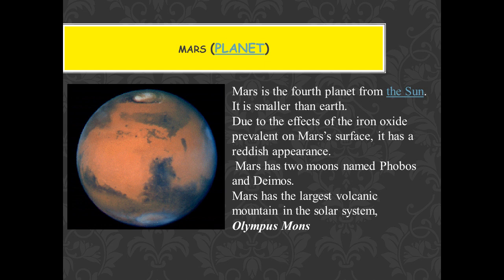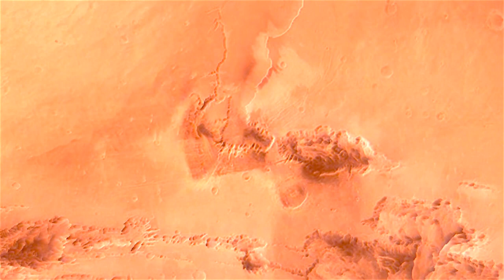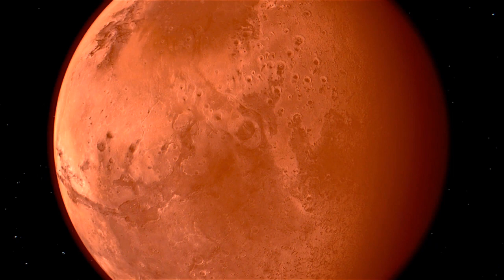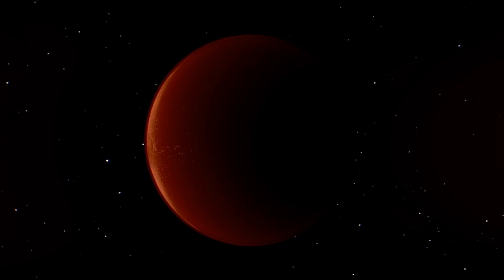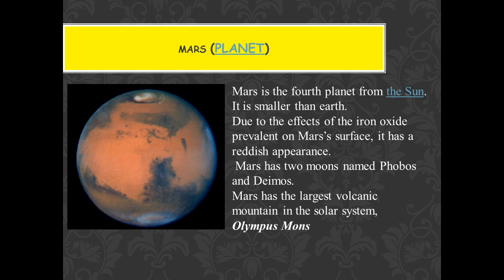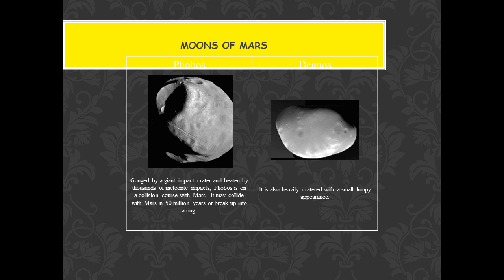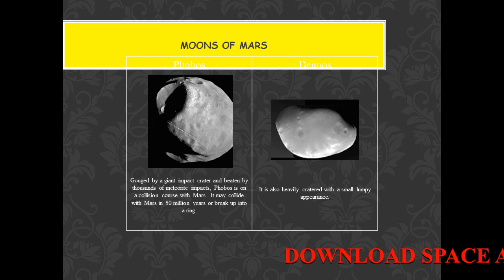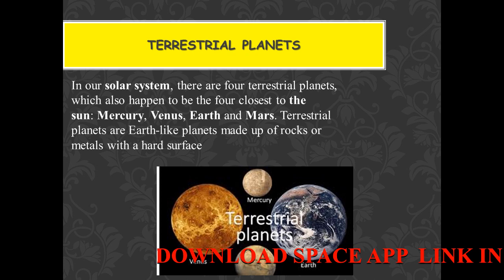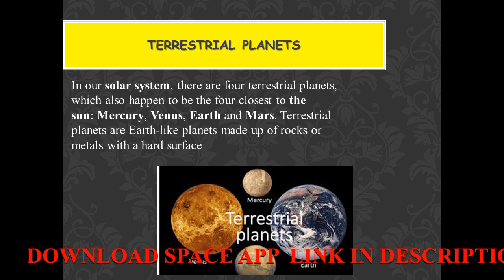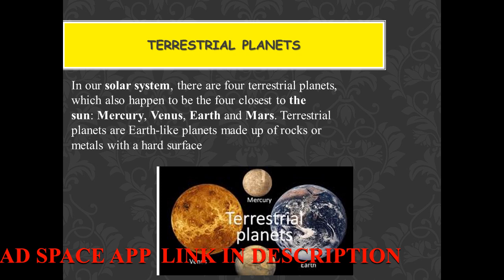Our fourth planet is Mars. We also call Mars Mangal in Hindi. It is a red planet because the soil is iron-rich, so when viewed from a satellite it appears red. Mercury, Venus, Earth, and Mars are the first four planets. Mercury and Venus have no satellites, but Earth has one moon and Mars has two moons. Mercury, Venus, Earth, and Mars are called terrestrial planets because their surface is made of rock and metal — they have a hard surface.